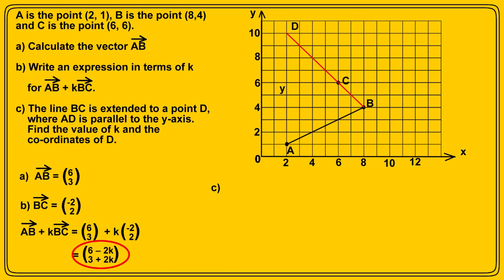But we can see that the vector from A directly to D is (0,y), where y is the distance from A to D. So this means we can equate the two. We can write (6-2K, 3+2K) is equal to (0,y). Now, please take a good look at that to make sure you've understood that step.